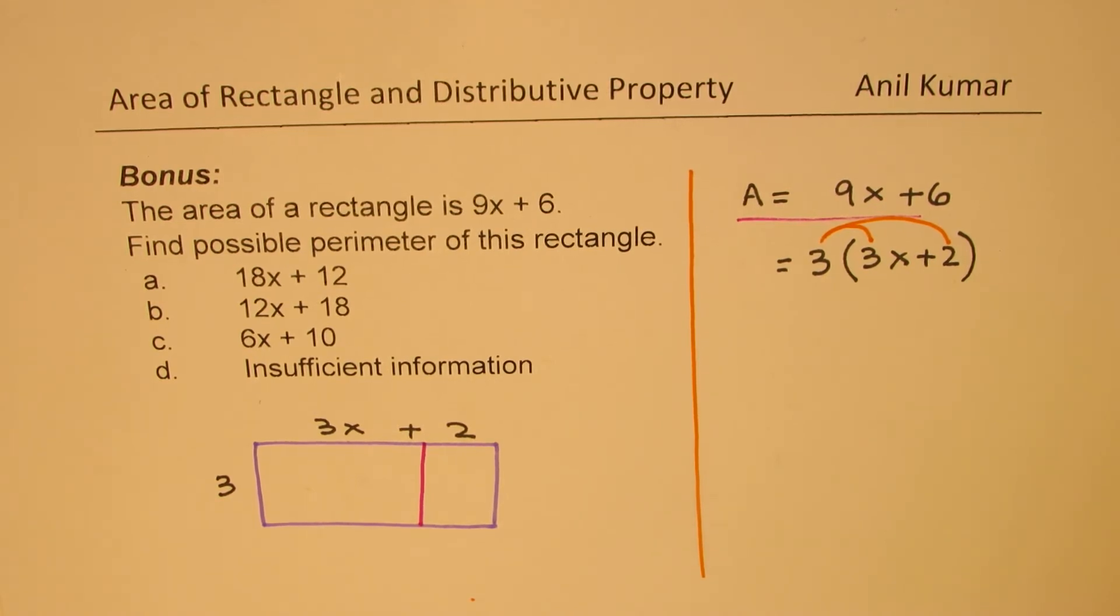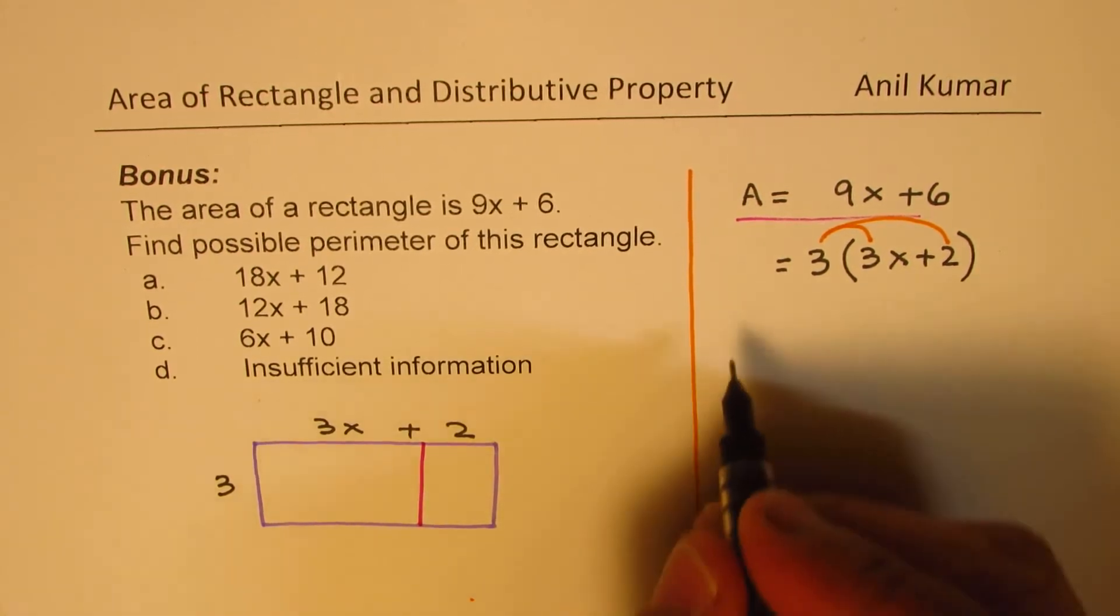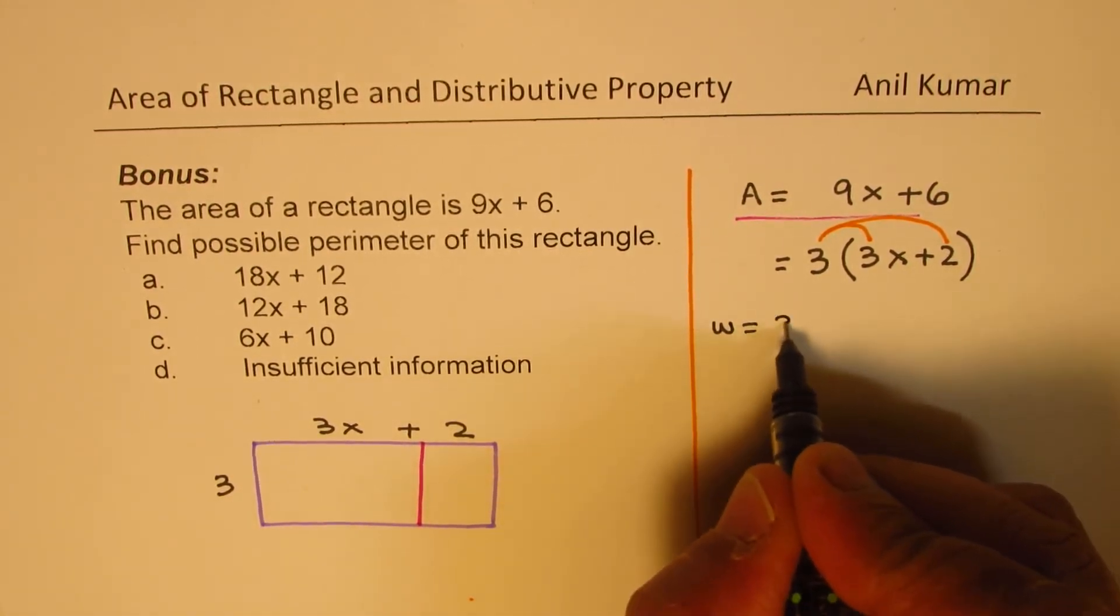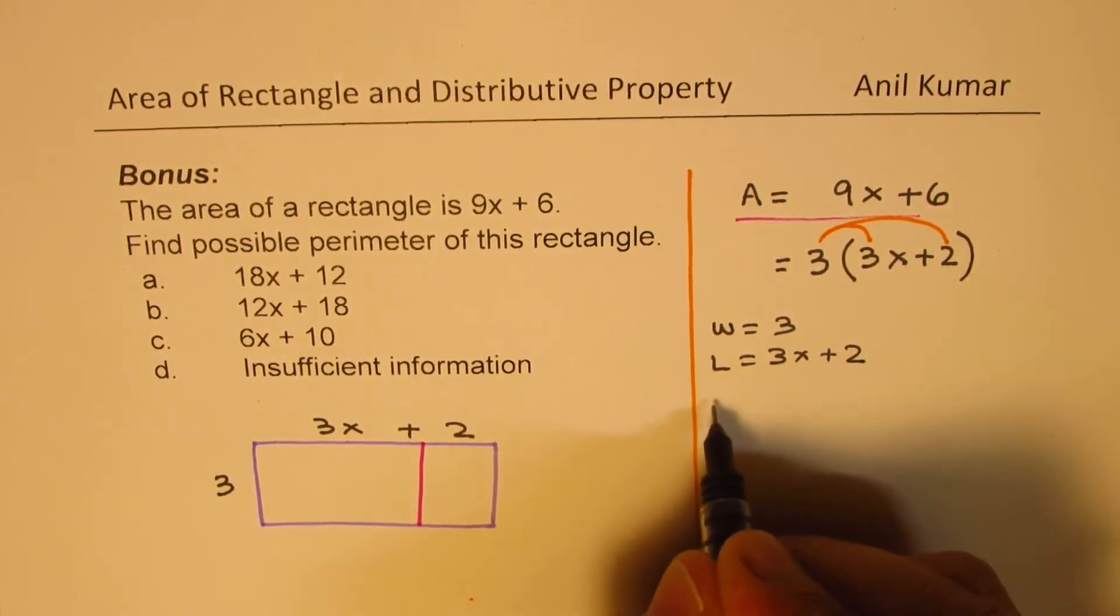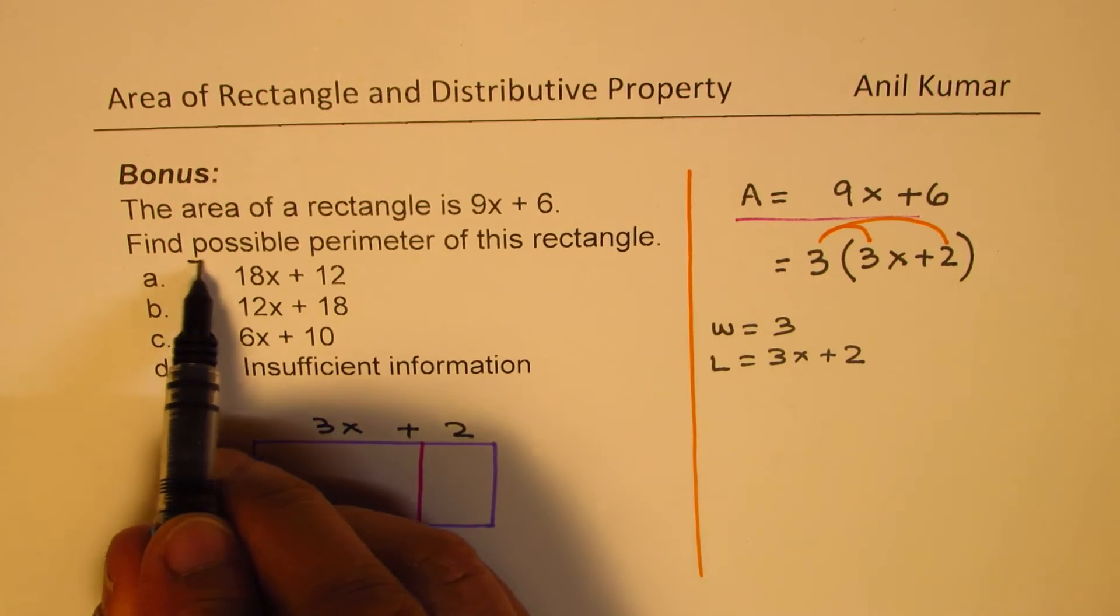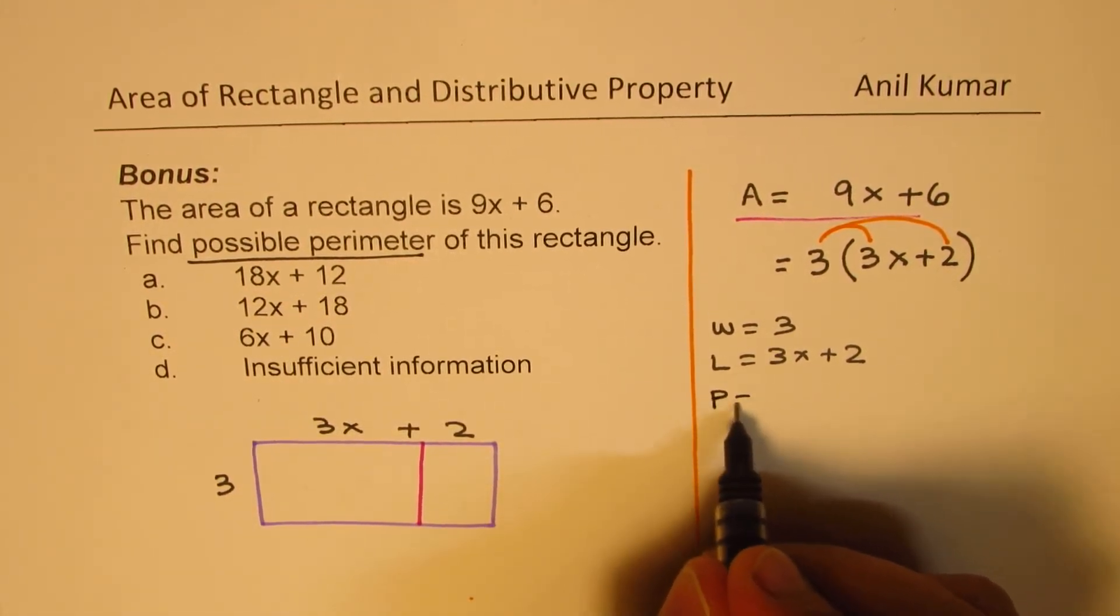Now, since we have done so, we know for our rectangle we have width of 3 and length of 3x + 2. We need to find a possible perimeter. So what should be the perimeter?